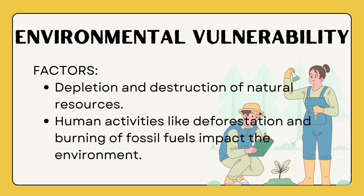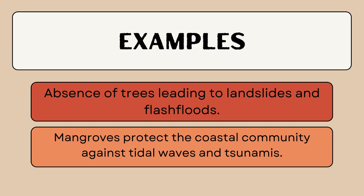Environmental vulnerability is about how natural and human-made changes to the environment affect disaster risk. Factors include depletion of natural resources and human activities like deforestation and burning fossil fuels, which increase the risk of disasters like landslides and climate change-related events. Examples include the absence of trees, which can lead to landslides and flash floods, and mangroves, which act as natural barriers protecting coastal communities from tidal waves and tsunamis. Preserving these ecosystems is crucial for disaster risk reduction.